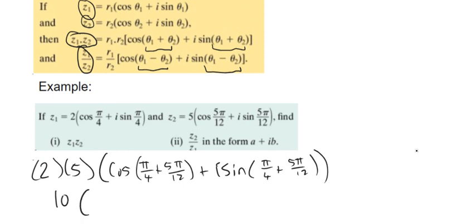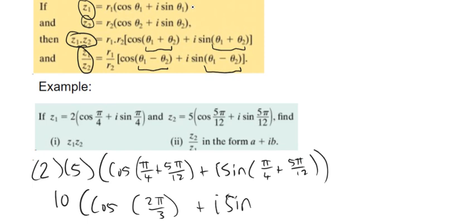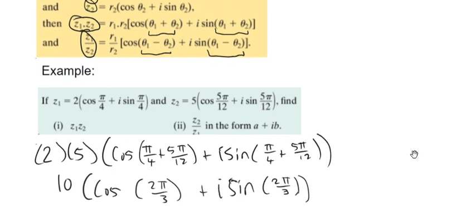So simplifying: 2 times 5 is 10 outside, and then we've got cos of the two angles added together. You can use a calculator in radian form to add those two angles, and it'll give you 2 pi over 3. Or you can just use the rules of fractions to find a common denominator. So the result is 10 times the quantity cos of 2 pi over 3 plus i sine of 2 pi over 3. And that's it — we've got the two complex numbers in polar form multiplied together.